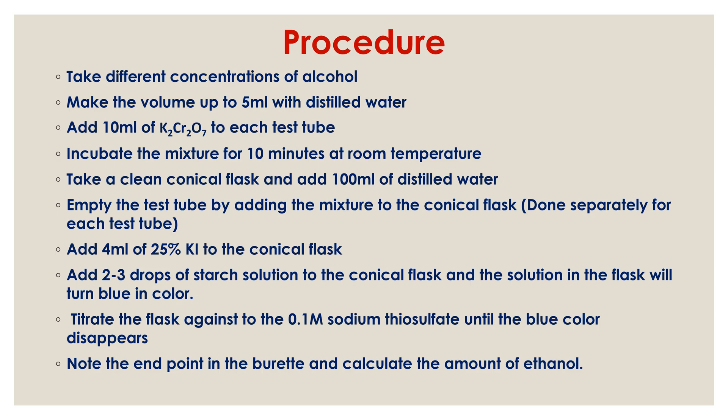Add alcohol at different concentrations to the test tubes and make the volume up to 5 ml with distilled water. So every test tube now has 5 ml of solution. Then add 10 ml of potassium dichromate solution to each test tube. Incubate the mixture for 10 minutes at room temperature.